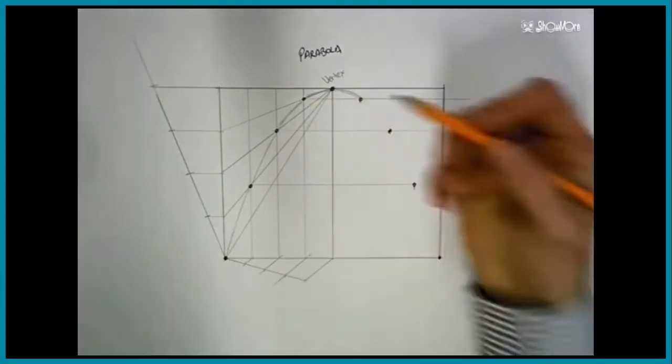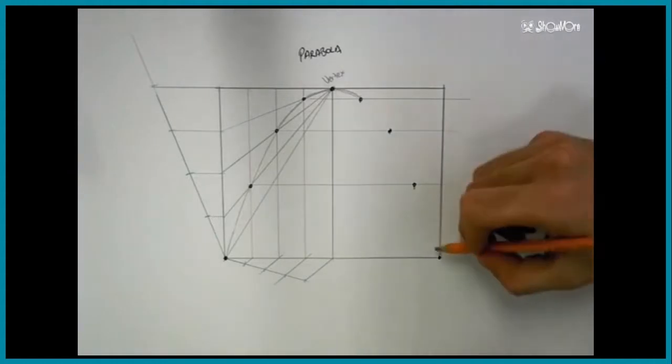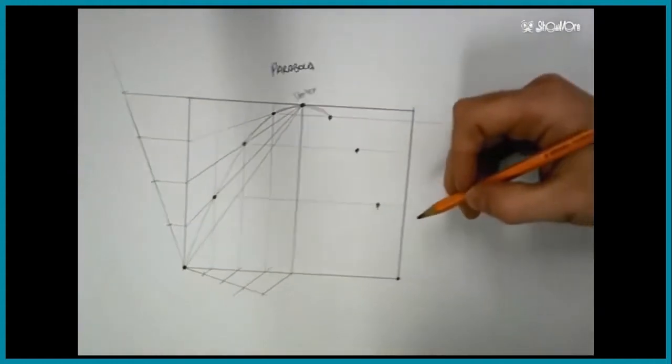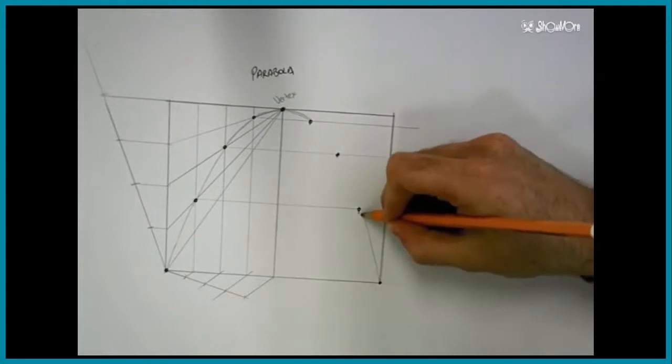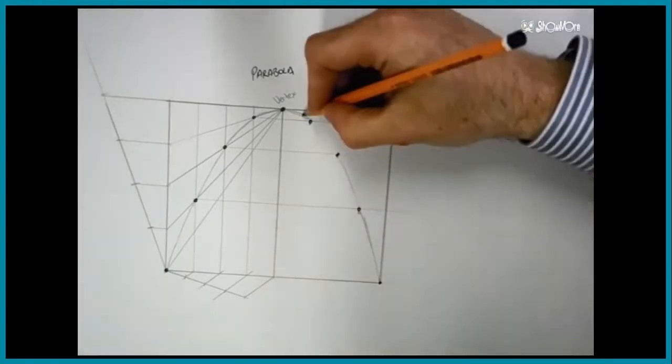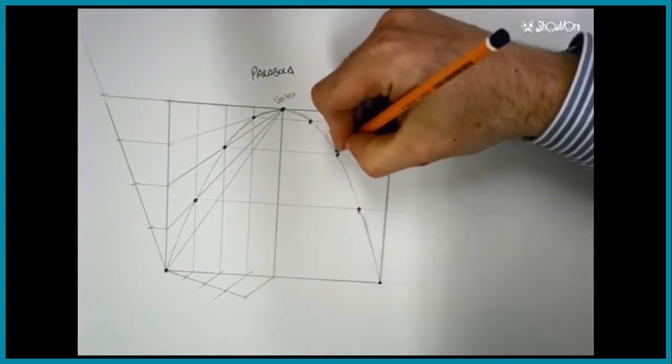Some people prefer to draw this in one continuous curve, and others prefer to take it in segments, perhaps moving and tilting their page to suit as they complete the different proportions of the parabola.